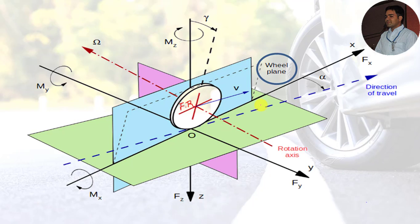The first term we need to understand is the wheel plane. The wheel plane is the central plane of the tire, normal to the axis of rotation. The axis of rotation is the spin axis, and the central plane passing through the tire and normal to that axis is known as the wheel plane. This dotted line indicates the wheel plane.